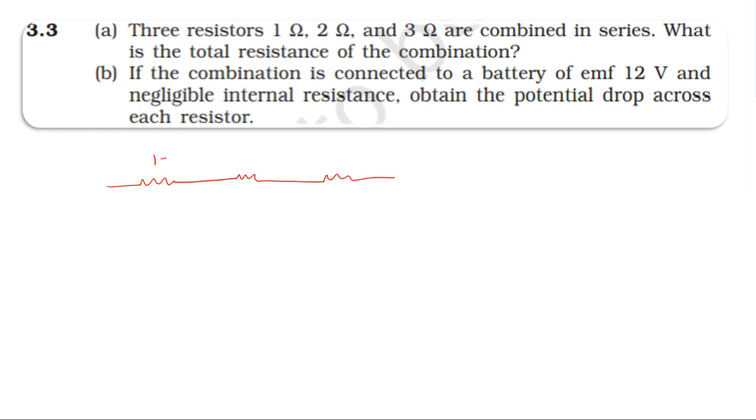The resistors are: 1 ohm, 2 ohm, and 3 ohm. Total resistance in series is equal to the sum of individual resistances: R_T = R1 + R2 + R3 = 1 + 2 + 3 = 6 ohm. So the total resistance of the combination is 6 ohm.